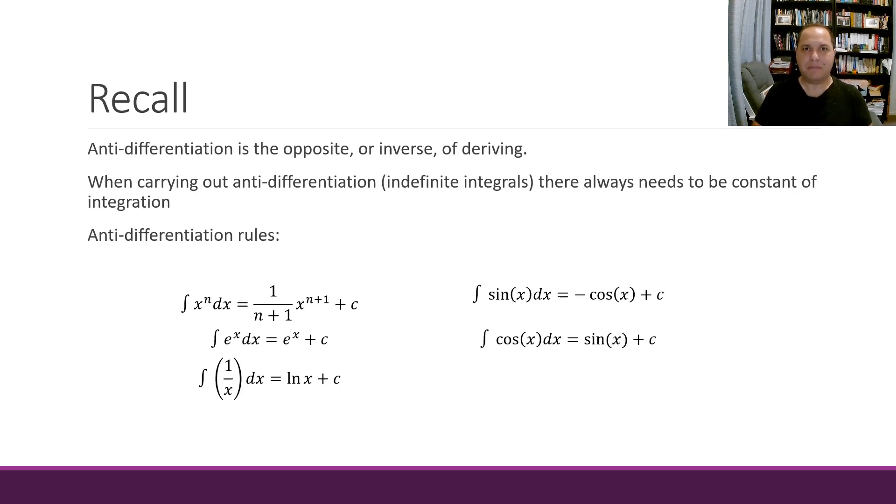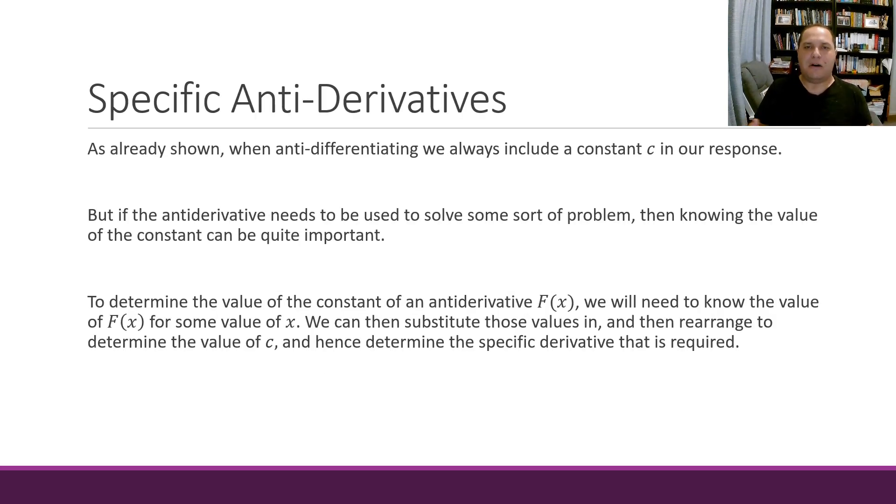Some things to remember: we need to remember our anti-differentiation rules, that anti-differentiation is the opposite of deriving, and we need to add that constant c any time we do anti-differentiation. But what we're doing now is we're going to try and work out our value of c, and there's a few reasons this might be important.